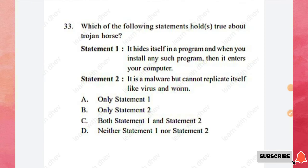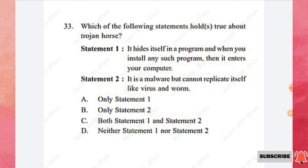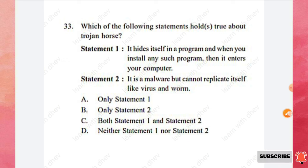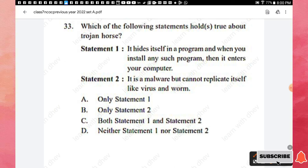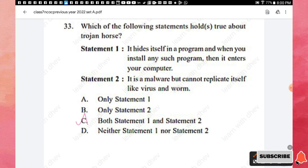Question 33: Which statements are true about a Trojan horse? Statement 1: it hides itself in a program and enters your computer when you install such a program. Statement 2: it is malware but cannot replicate itself like a virus or worm. Both statements are true regarding Trojan horse, so option C is the right answer.